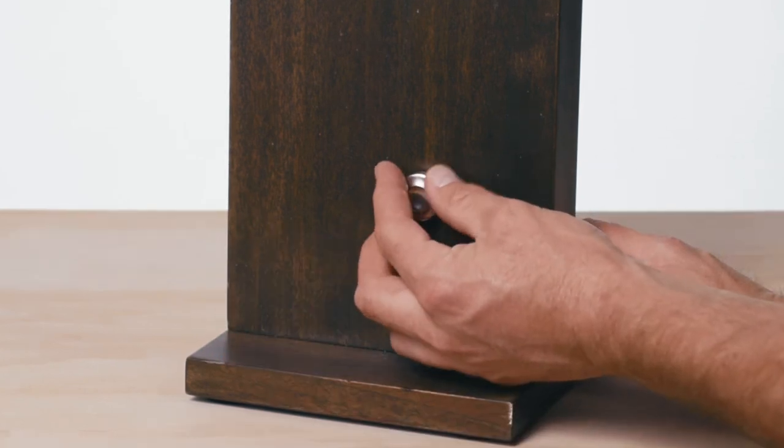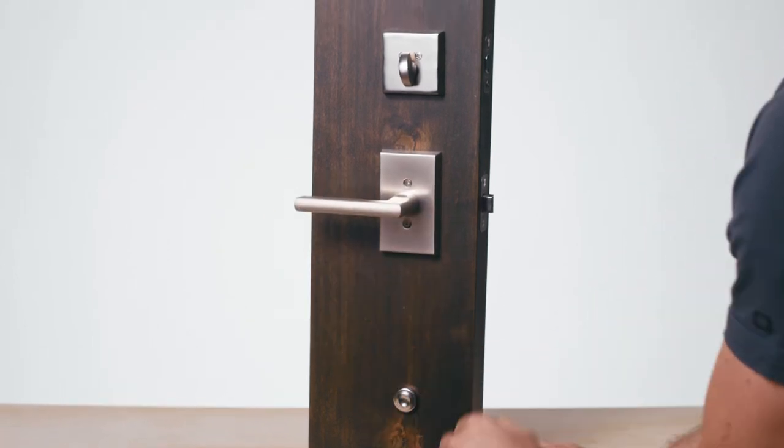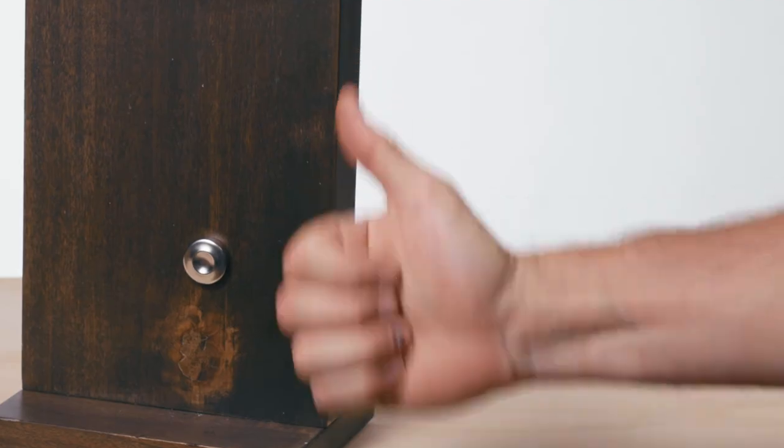Now screw the decorative cap onto the threaded washer. And with that, check to make sure that the handle set is functioning properly. Thank you for choosing Sherlock Hardware to complete your home.